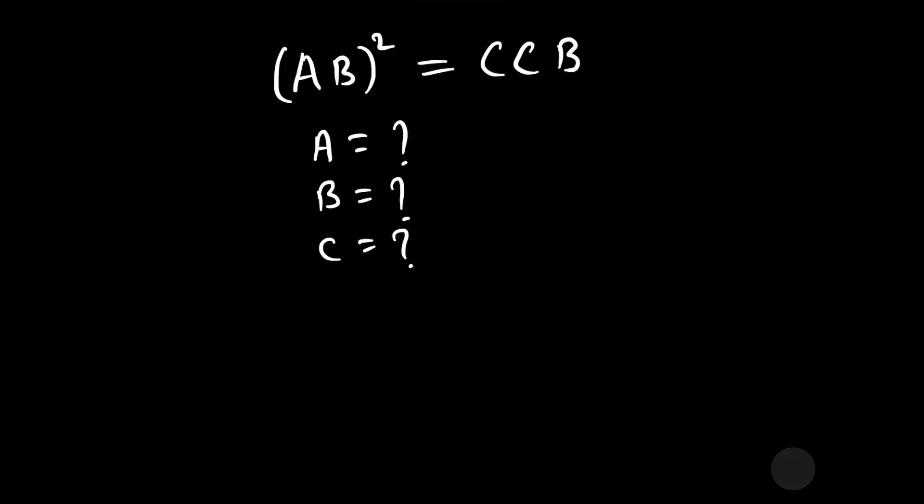Welcome to our YouTube channel Saval Bawal. Today's problem is: the whole square of AB is equal to CCB, where AB is a two-digit number and CCB is a three-digit number. We have to find the values of A, B, and C. Before I start solving this question, please subscribe to our channel and press the bell icon.